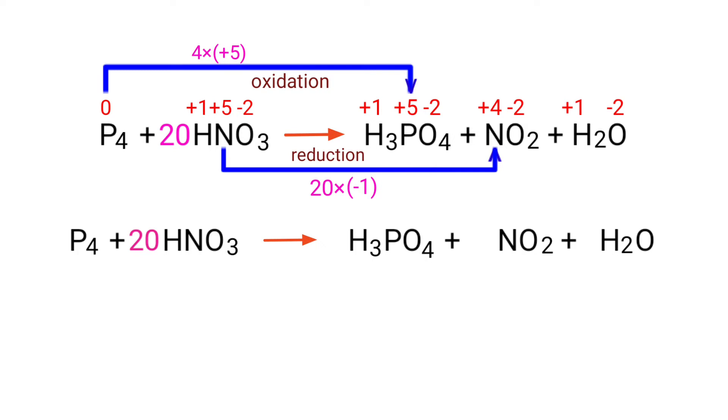Now you can balance the number of atoms in this equation. In the reactant side, there are 4 phosphorus atoms, 20 hydrogen atoms, 20 nitrogen atoms and 60 oxygen atoms present. On the products side, there are 1 phosphorus atom, 5 hydrogen atoms, 1 nitrogen atom and 7 oxygen atoms.